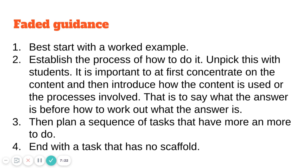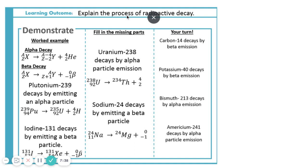With faded guidance, we plan a sequence of tasks that have more for the student to do each time, so the final task has no scaffold at all. The worked example is on the left-hand side, followed by a fill-in-the-missing-parts section where there is only one feature the students have to work on before they move on to increasingly more difficult tasks.